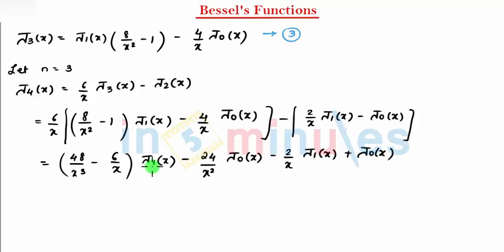Finally, from here and here, I can take J1(x) common, which gives me (48/x³ - 8/x) J1(x).